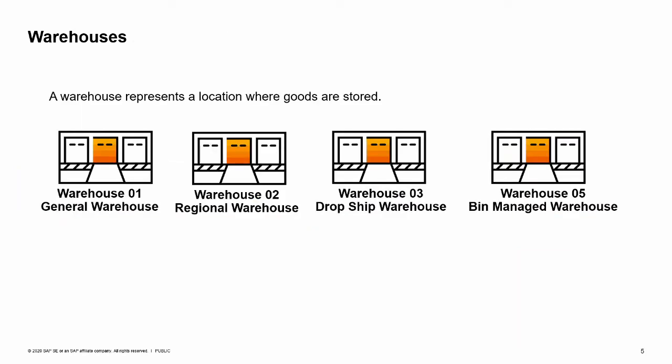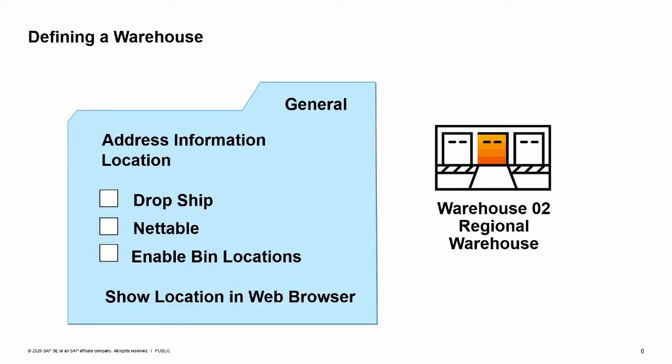A warehouse represents a location where goods are stored. The first step in defining a warehouse is to enter a warehouse code and a warehouse name. Then you need to specify where the warehouse is by entering location information. This location information is important because typically the address of the warehouse associated with the first document row is used as the ship-to address.